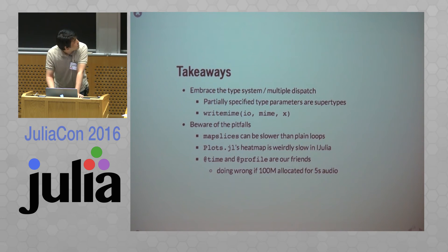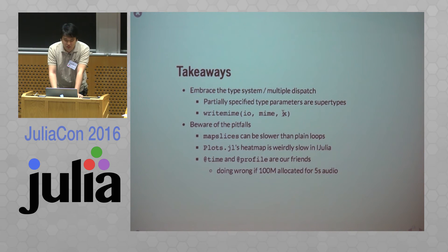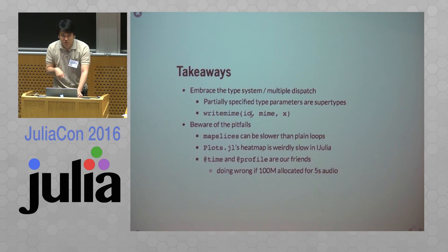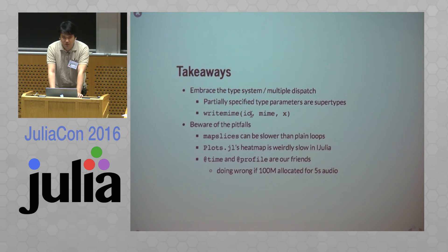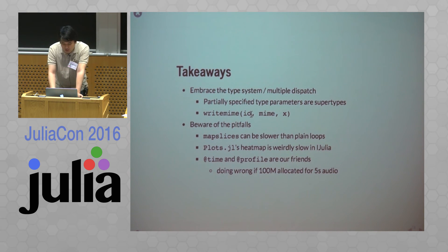Another example is writeMime — in this case IO, MIME, and X are all parameters where I can use subtyping across all three. So I could use IO as a file to output the MP3, or IO as a base64 encoding stream to display in IJulia. One thing I found is that map and other functional constructs can sometimes be slower than plain loops. I originally tried to use Plots.jl, but its heatmap is somehow slow in IJulia, so I went back to PyPlot. Discovering performance issues was made easy using the @time and @profile macros — when processing a five-second audio file and allocating 100 megabytes, I knew something was wrong.